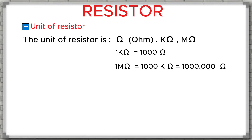The unit of resistance is called the ohm, written with the symbol Ω. We also commonly use kilo-ohm, written as kΩ, and mega-ohm, written as MΩ. Here's the conversion: one kilo-ohm equals 1,000 ohms. One mega-ohm equals 1,000 kilo-ohms, which is the same as one million ohms.